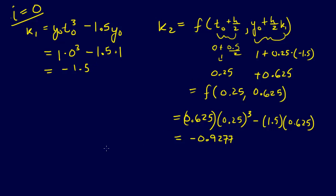The result of that is negative 0.9277. Now we've got our K1 and our K2. We really just needed our K1 to calculate our K2, but now that we have our K2, we can figure out our Y. So we've got Y1 is equal to Y0 plus K2 times H, and that is equal to 1 plus negative 0.9277 times 0.5, and that is going to be equal to 0.5361. So that's the first value for i equals 0.